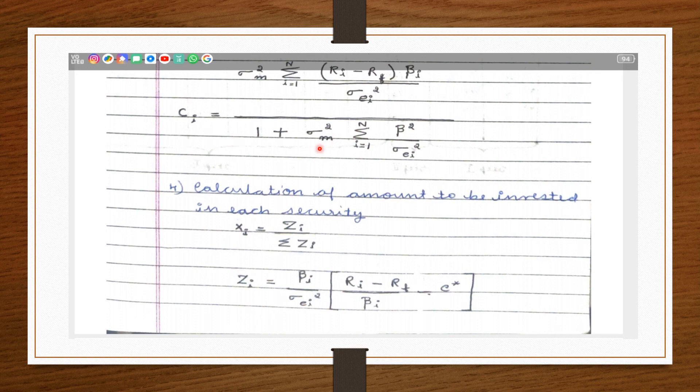Next step is calculation of the amount to be invested in each security. These are the accumulated values of C that start declining. There will be a certain point wherein the cutoff point will be taken and that stock ratio is the cutoff ratio C.